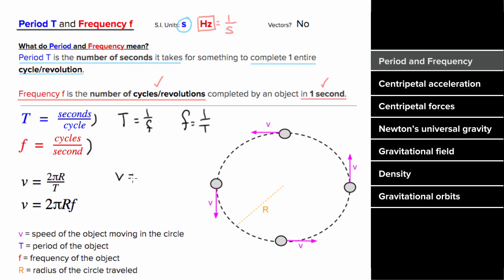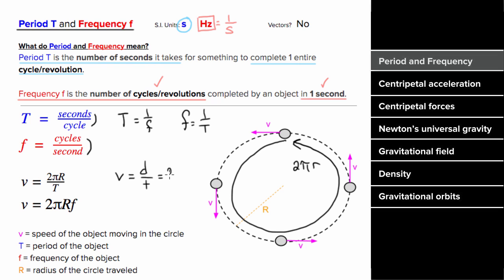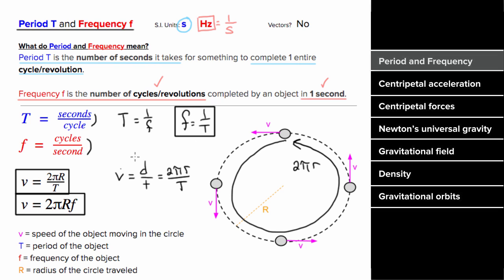Since speed is just distance per time, and the distance the object travels in one cycle is two pi r (the circumference), the speed would just be two pi r per the period. Or, since one over the period is the frequency, you could write the speed as two pi r times the frequency. Since time is not a vector, these quantities are not vectors and they cannot be negative.